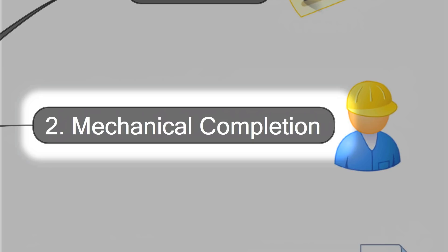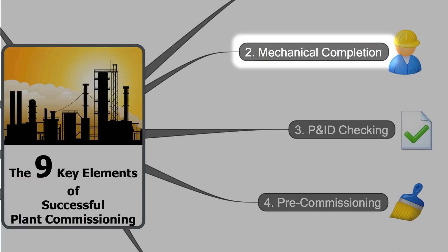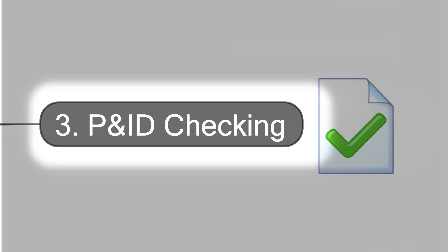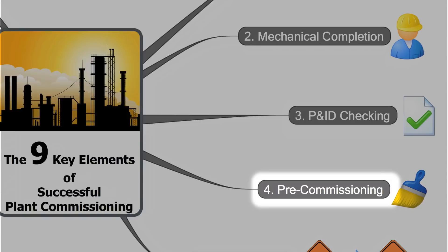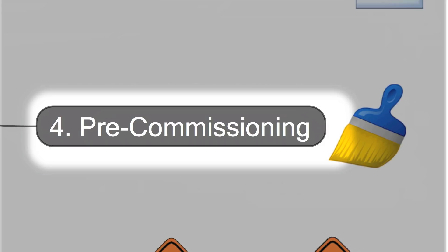The third key element is at the same time the first big task in the field for the commissioning team — it's a P&ID check. The commissioning engineers will verify that everything in the field is built according to the specifications. Pre-commissioning is the fourth key element. It includes cleaning of pipes by blowing and flushing, mechanical cleaning of vessels and tanks, no-load test runs of motors, and much more.